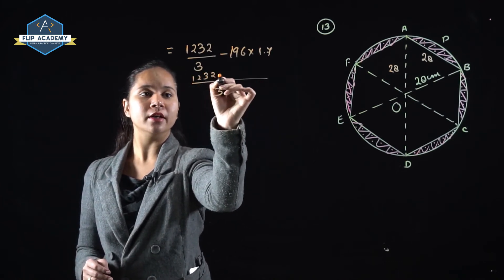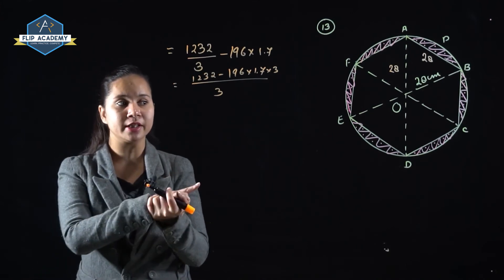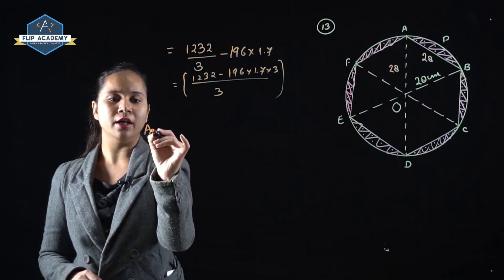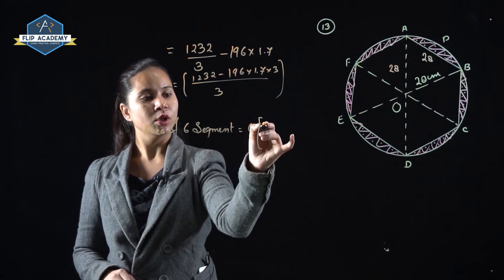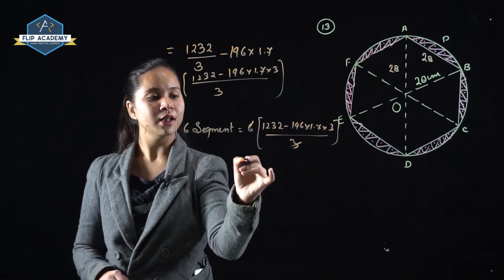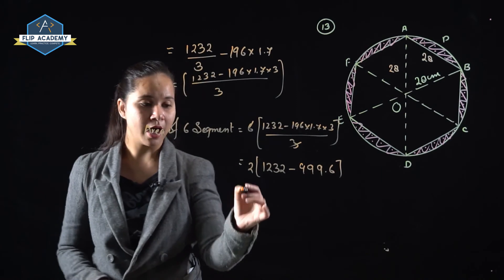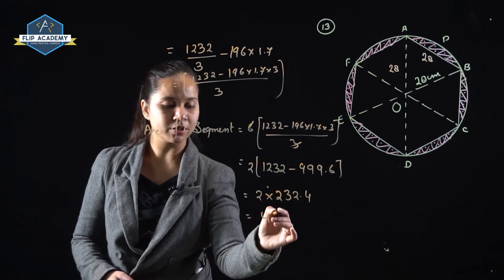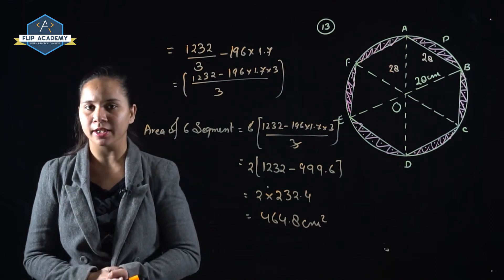We need to find the area of all 6 such regions. So, area of 6 segments = 6 × (1232 − 196 × 1.7 × 3) / 3. Simplifying: 2 × (1232 − 999.6) = 2 × 232.4 = 464.8 cm². This is the total area of all 6 segments.